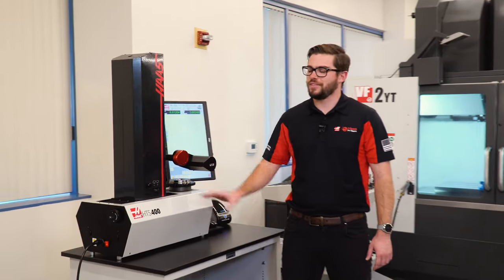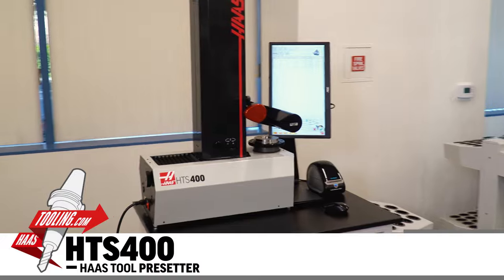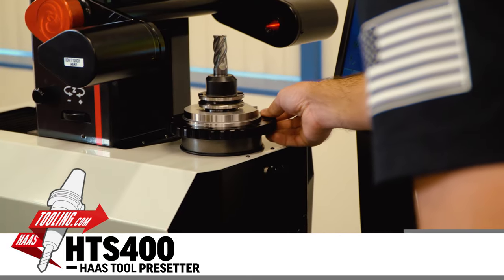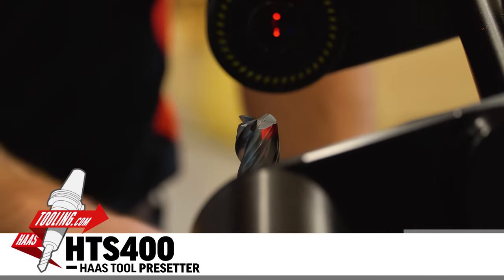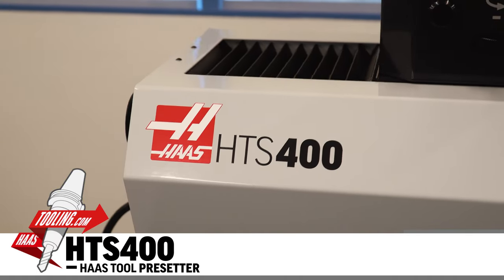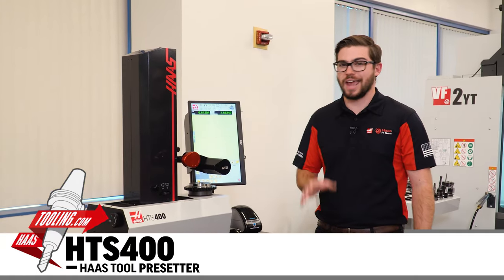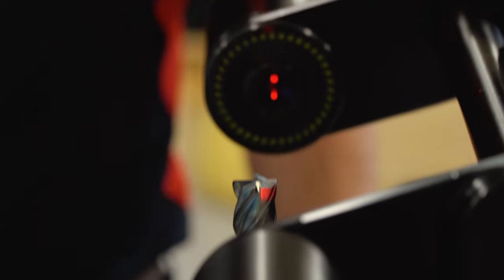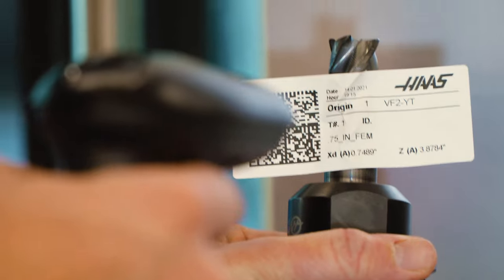Now on HaasTooling.com, the HTS-400. This Haas tool pre-setter allows for machining operations and tool measurement to occur at the same time, drastically reducing spindle downtime.